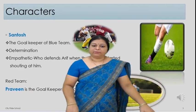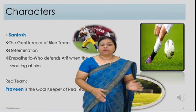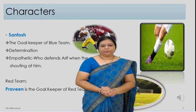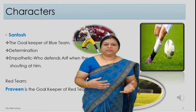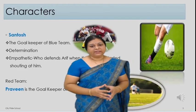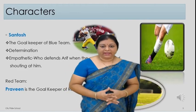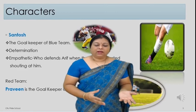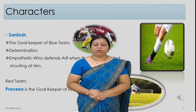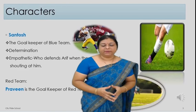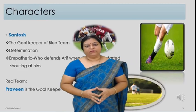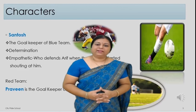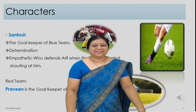Another character in the story is Praveen, and he belongs to the red team. He is the goalkeeper of the red team. So how does this game start? Why does the red team play aggressively? Who is injured in the story? How does Arif help the injured person? All these things we will know more about in another video. Till then, bye. Have a nice day.